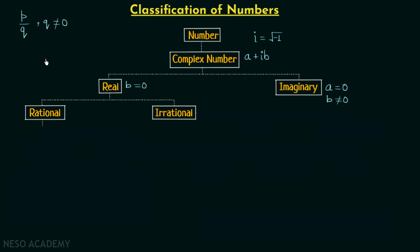Now we will talk about the two types of rational numbers. The first one is the terminating decimal form. For example, 1.5 — here we have only one digit in the decimal place, there is no repetition and no continuous decimal numbers, so the decimals are terminated. We can write this as p over q: 1.5 equals 3 over 2.